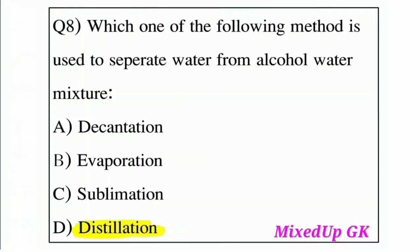Question 8: Which one of the following methods is used to separate water from alcohol? Option A: Decantation, Option B: Evaporation, Option C: Sublimation, Option D: Distillation. The correct answer is Option D: Distillation, as this is the process used to separate an alcohol-water mixture.